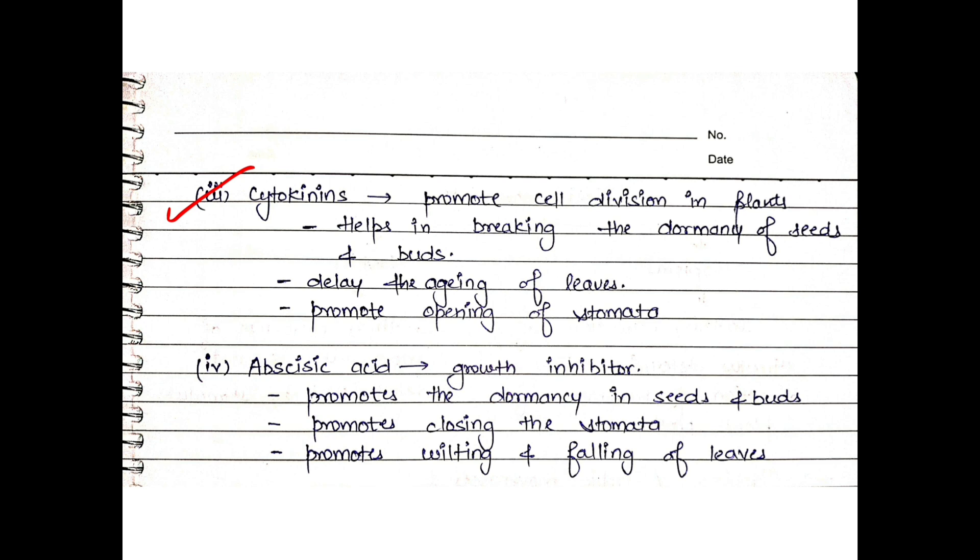Next is Cytokinin. Cytokinin promotes cell division in plants. Cyto means cell, kinin means division. This promotes cell division in plants and helps in breaking the dormancy of seeds and buds, same as gibberellin. Another work of cytokinin is to delay the aging of leaves. The leaves are green and then start to turn yellow, but if we treat it with cytokinin, the aging of leaves will stop or delay. This also promotes opening of stomata.